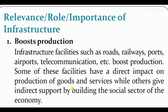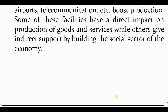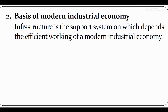Some of these facilities have a direct impact on production of goods and services, while others give indirect support by building the social sector. जो भी infrastructure facilities हैं — roadways, railways, airports, telecommunication — इनका directly impact होता है हमारे production के उपर, goods and services के उपर। Indirectly भी social sector और economic sector दोनों में support मिलता है।